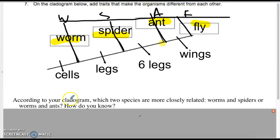My apologies, I printed it wrong. But we put cells as the derived characteristic, and then worms have that. Then we put just regular legs, the next would be spiders. Six legs would be ants, then wings would be flies. If you turn the page to page 26, there are two questions on the top of page 26 to help analyze the cladogram.